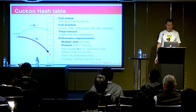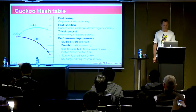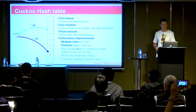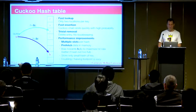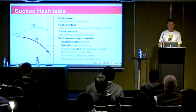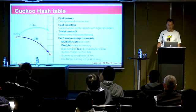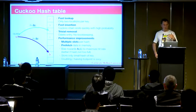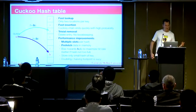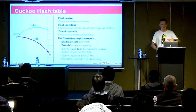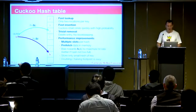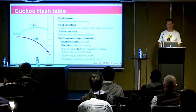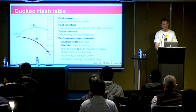Why is this a really good idea? Because now I can do very fast lookup — there are only two possible locations where any key can be stored; if it's not there, it's not there. Insertion is fairly cheap. Removal is trivial — just remove the entry, no other bookkeeping. Performance details include multiple slots per hash, prefetching data from memory, biasing toward the first slot to maximize hit rate, and only storing a small hash. It's a really cool data structure.